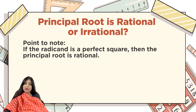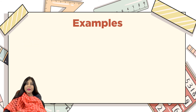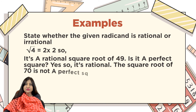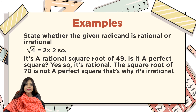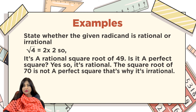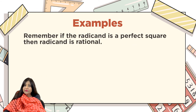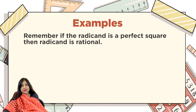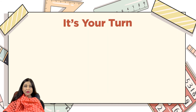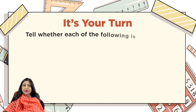Let's solve a few more examples. The square root of 4: since 2×2=4, it's a perfect square, so it's rational. The square root of 49: it's a perfect square, so it's rational. The square root of 17: it's not a perfect square, so it's an irrational number. Remember: if the radicand is a perfect square, the result is rational.